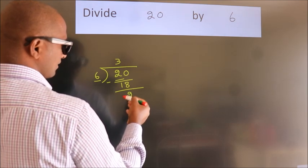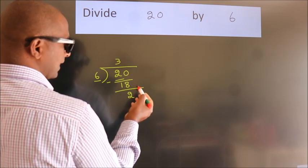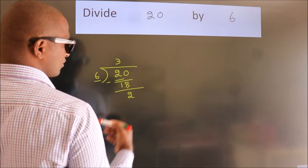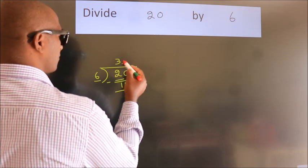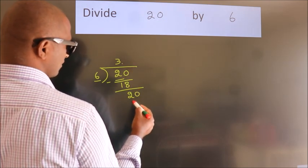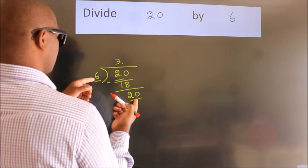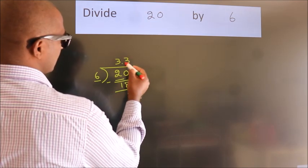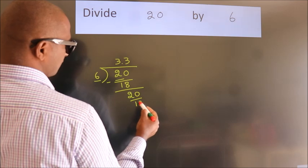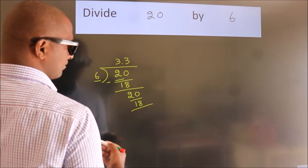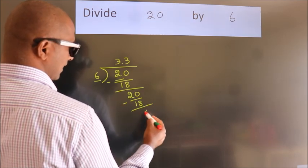After this, no more numbers to bring it down. So, what we do is we put a dot and take 0. So, 20. A number close to 20 in the 6 table is 6 threes 18. Now, we subtract. We get 2.